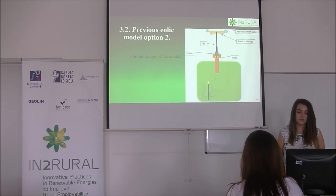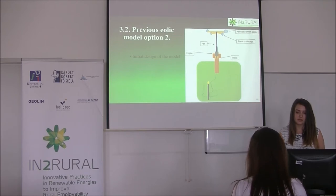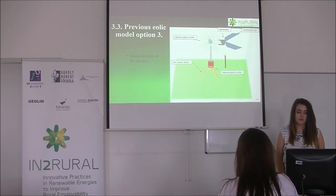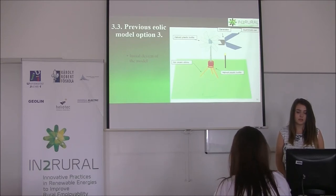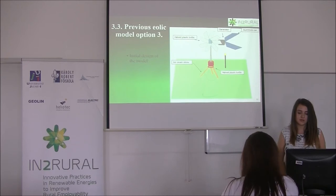The second eolic model preview is made from a pan, engine, wood, plastic bottle cups, and half ice cream sticks, and so on. The third eolic model preview is made from two half plastic bottles, ice cream sticks, a generator, and aluminum foil.